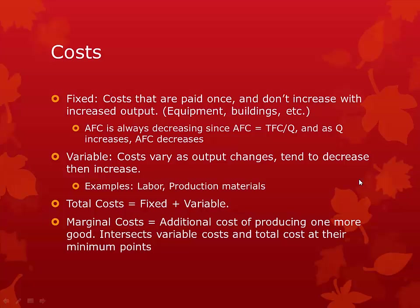Variable costs are costs that you need to pay to continue production, like labor or materials. These vary as output changes, but the general trend is that variable costs will initially decrease and then increase later. The total cost is just the sum of fixed and variable costs. Marginal costs are the costs for producing an additional good. The graph of marginal costs intersects average total costs and average variable costs at their respective minimums.